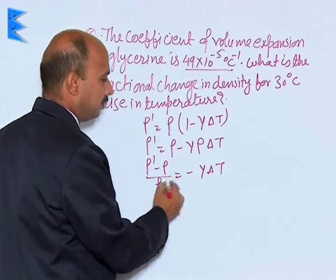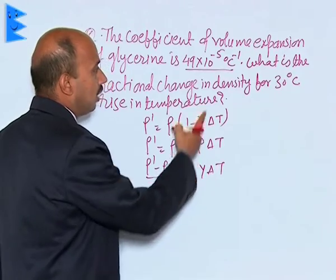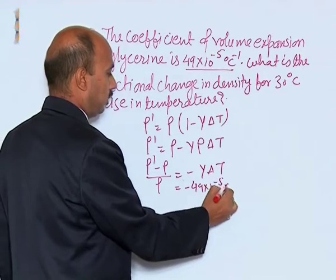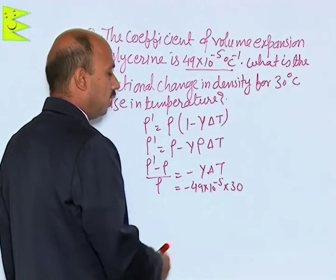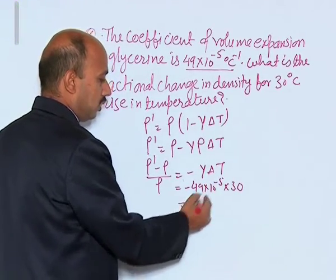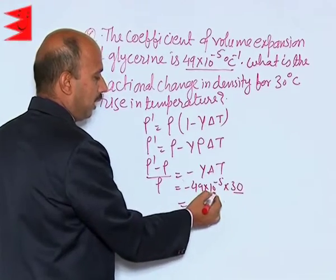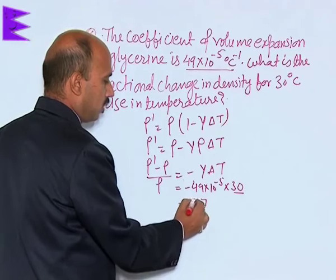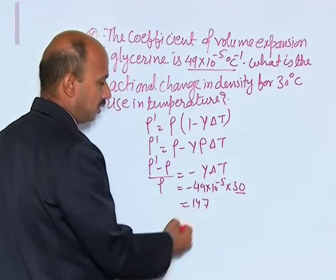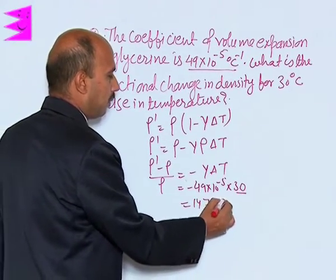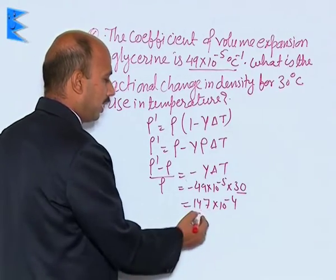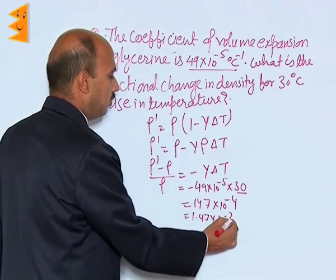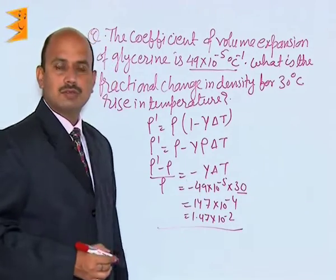Now we can write here minus gamma is here 49 into 10 raised to power minus 5 into 30. Now we can multiply here. So here 1447 into 10 raised to power minus 4, and now we can write here 1.47 into 10 raised to power minus 2. That is all, this is the answer.